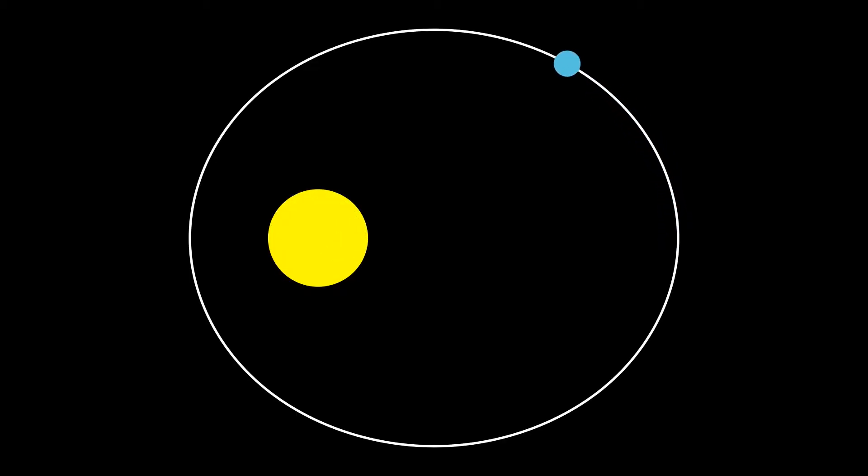Planets like the Earth orbit around large masses such as the Sun. According to Kepler's first law, planetary orbits are elliptic.